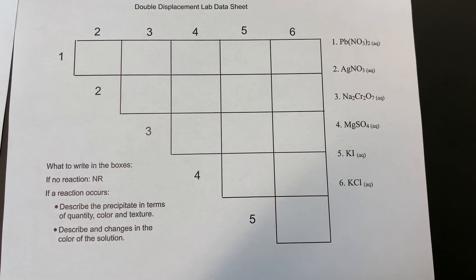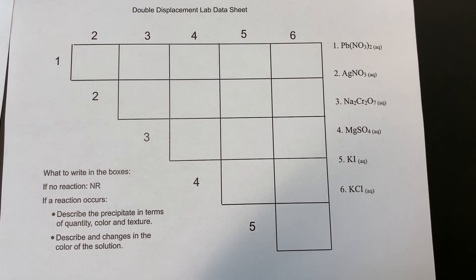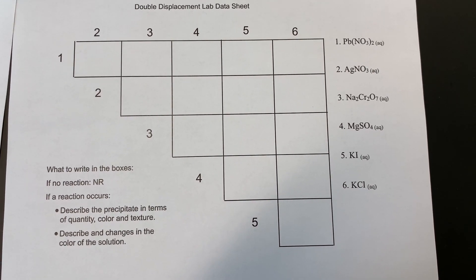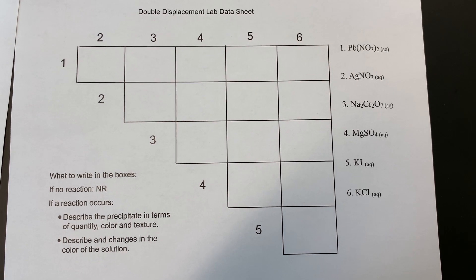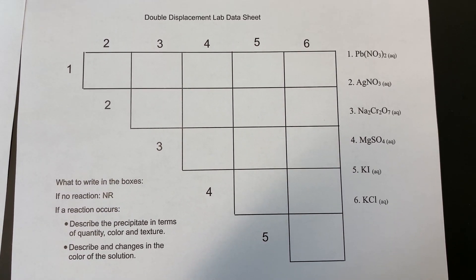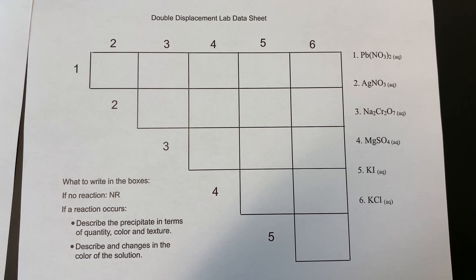Here we'll write down our observations. There may be no reaction, so we'll just say NR for that. But if there is a reaction, we want to describe what the precipitate looks like: how much of it, what color, and is there a texture to it?